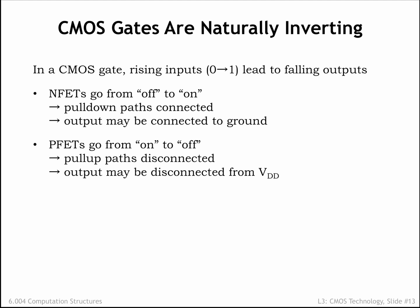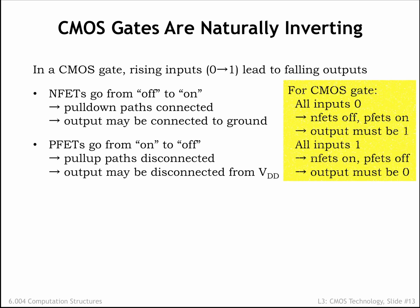Similar reasoning tells us that falling inputs must lead to rising outputs. In fact, for any non-constant CMOS gate, we know that its output must be 1 when all inputs are 0, since all the NFETs are OFF and all the PFETs are ON — and vice versa: if all the inputs are 1, the gate's output must be 0.